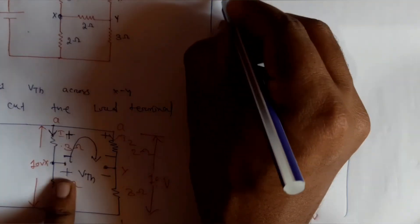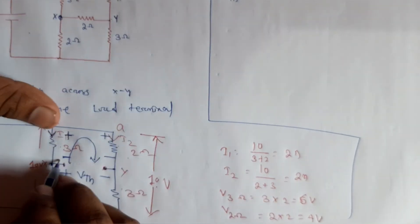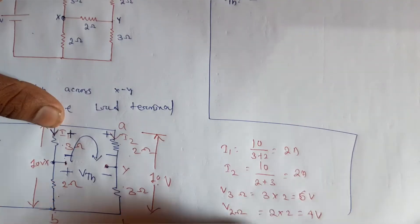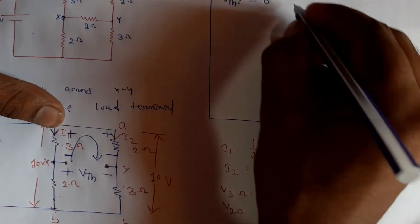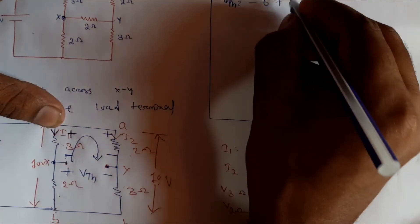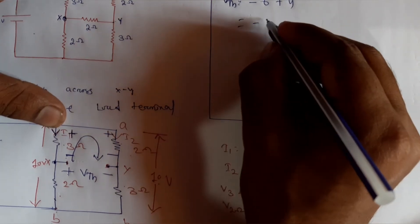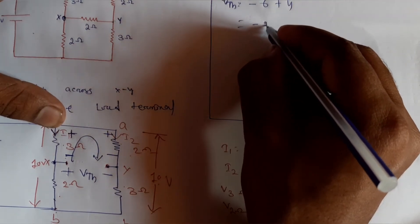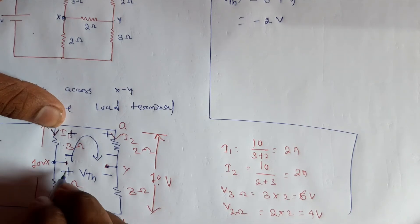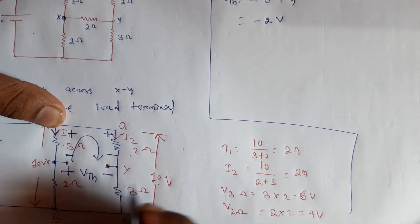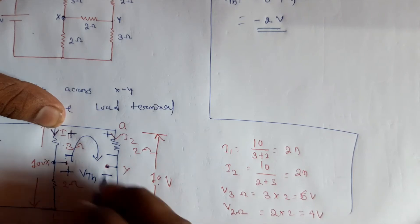After applying KVL, Vth equals minus 6 volts plus 4 volts, which gives minus 2 volts. Because our polarity assumption gives a negative result, if we reverse the polarity it is 2 volts. So Vth equals 2 volts.